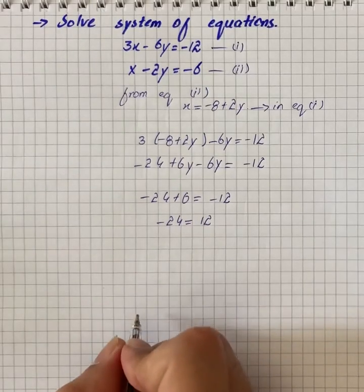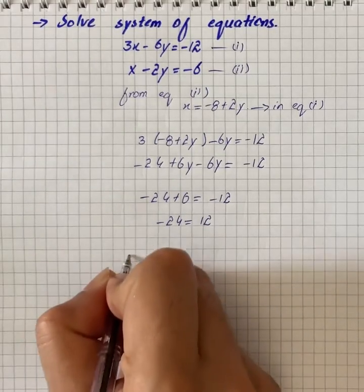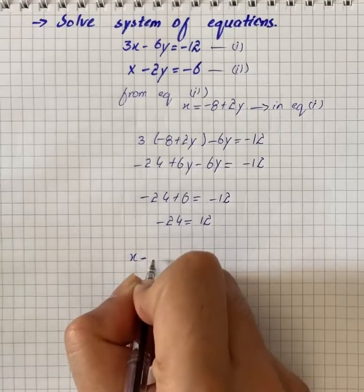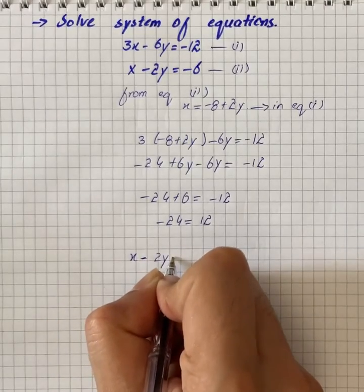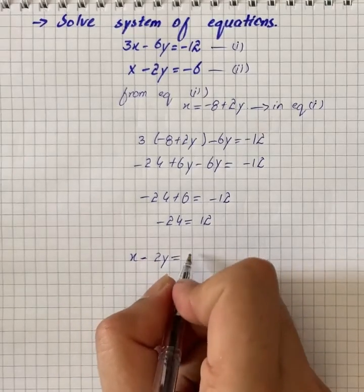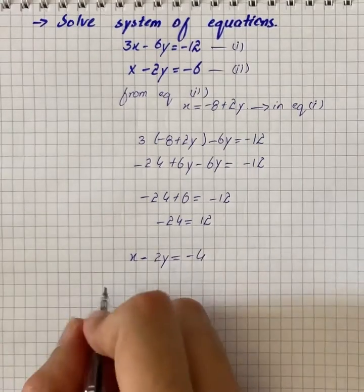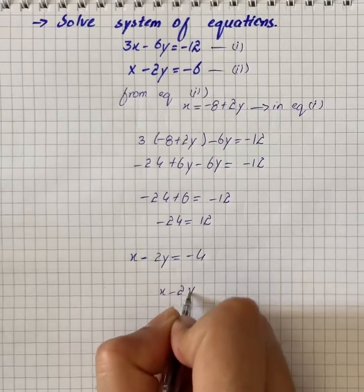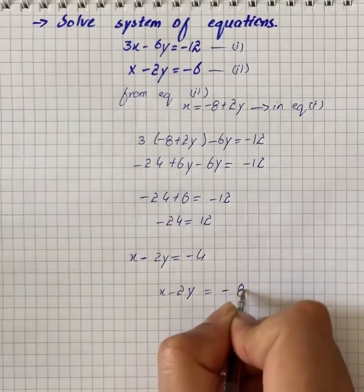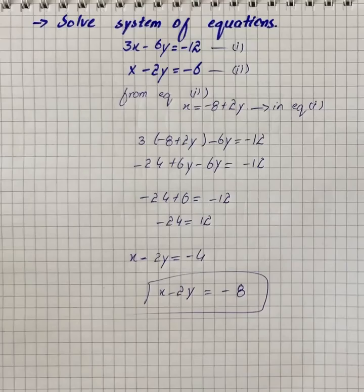We will rewrite it as x minus 2y equals to minus 4. We actually divide it by 3, so we have x minus 2y equals to minus 8.